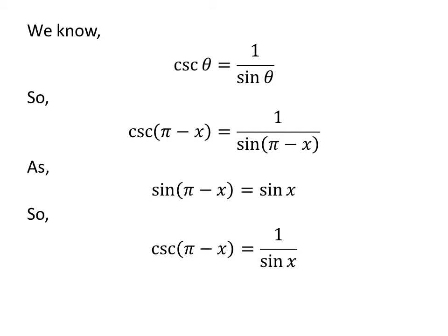Let us apply the above identity in the above expression of cosecant of pi minus x. So, cosecant of pi minus x is equal to 1 upon sin of x.